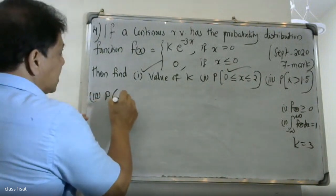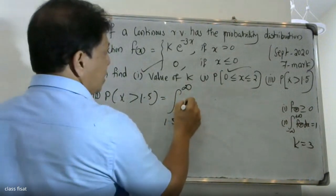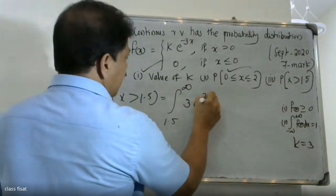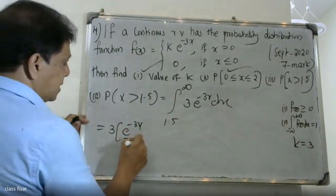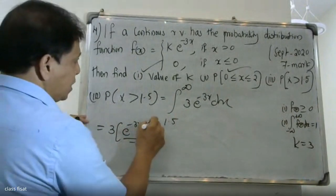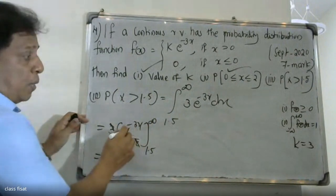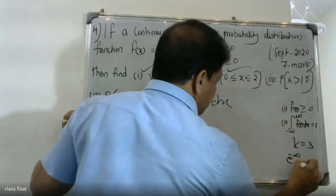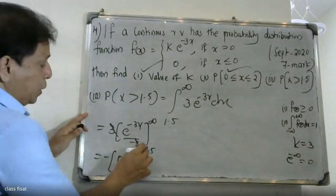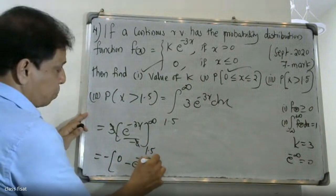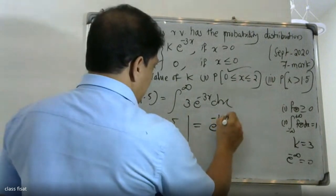For the third part, probability of x > 1.5: we integrate from 1.5 to infinity. With k = 3, this is 3 · [e^(−3x) / (−3)] from 1.5 to infinity. The upper limit gives e^(−infinity) = 0, and the lower limit gives e^(−4.5). So the result is −(0 − e^(−4.5)) = e^(−4.5) ≈ 0.011.